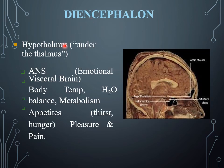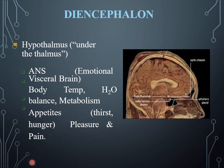The diencephalon hypothalamus region is located under the thalamus and is part of the autonomic nervous system — it is the emotional and visceral brain. It is involved in body temperature, water balance, and metabolism. It is also involved in the maintenance and regulation of thirst, hunger, pleasure, and pain.